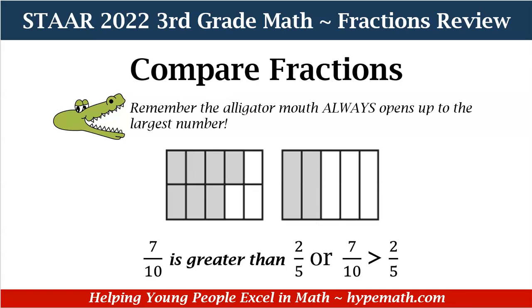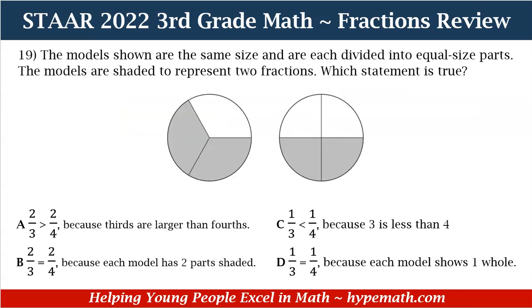Let's look at one more example. On the left, our model is separated into ten whole parts — ten is our denominator — and seven are shaded, so our fraction is seven-tenths. On the right, the rectangle is divided into five parts — our denominator — and two parts are shaded, so our fraction is two-fifths. Seven-tenths has more shaded than two-fifths, so seven-tenths is greater than two-fifths.